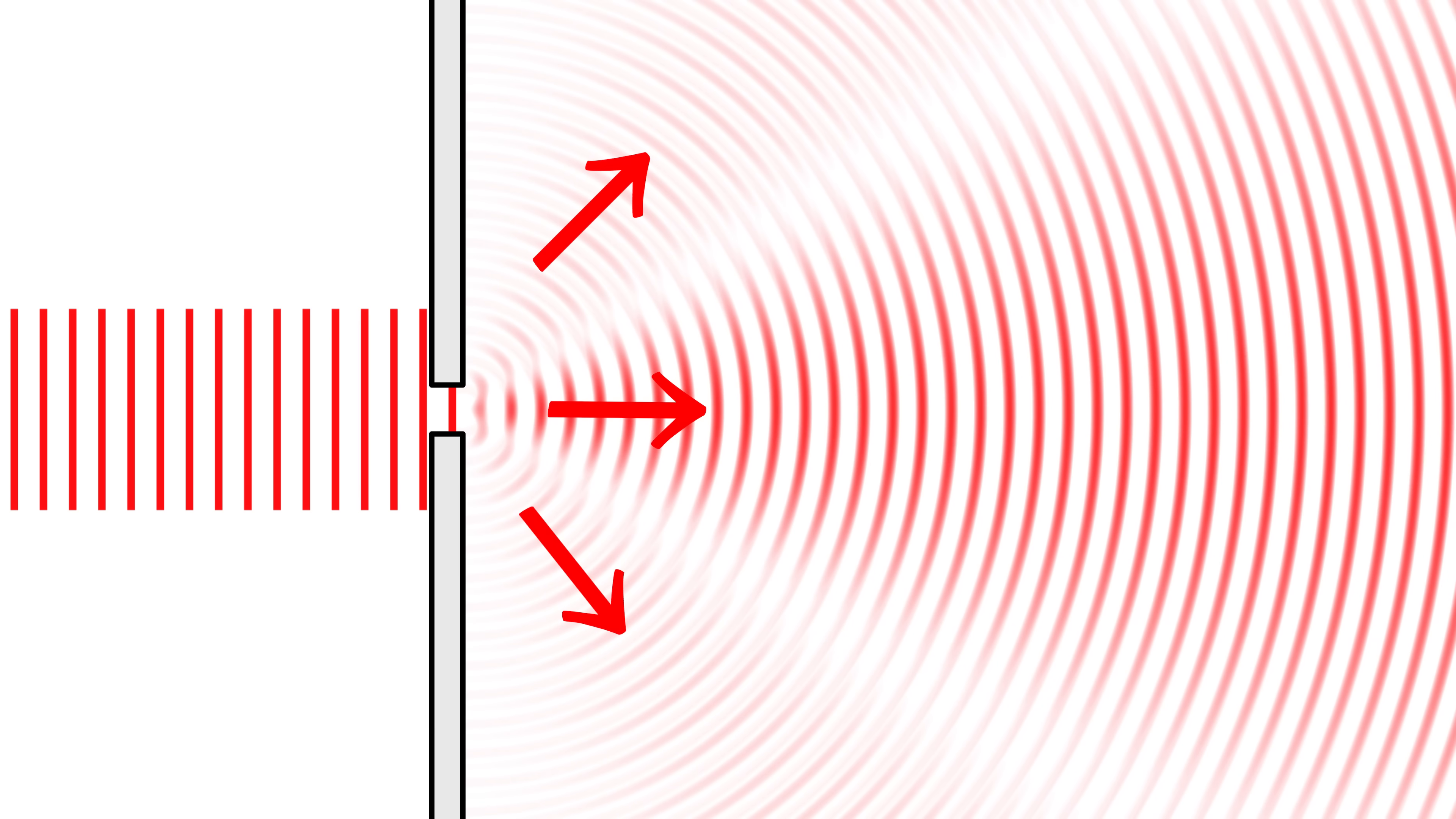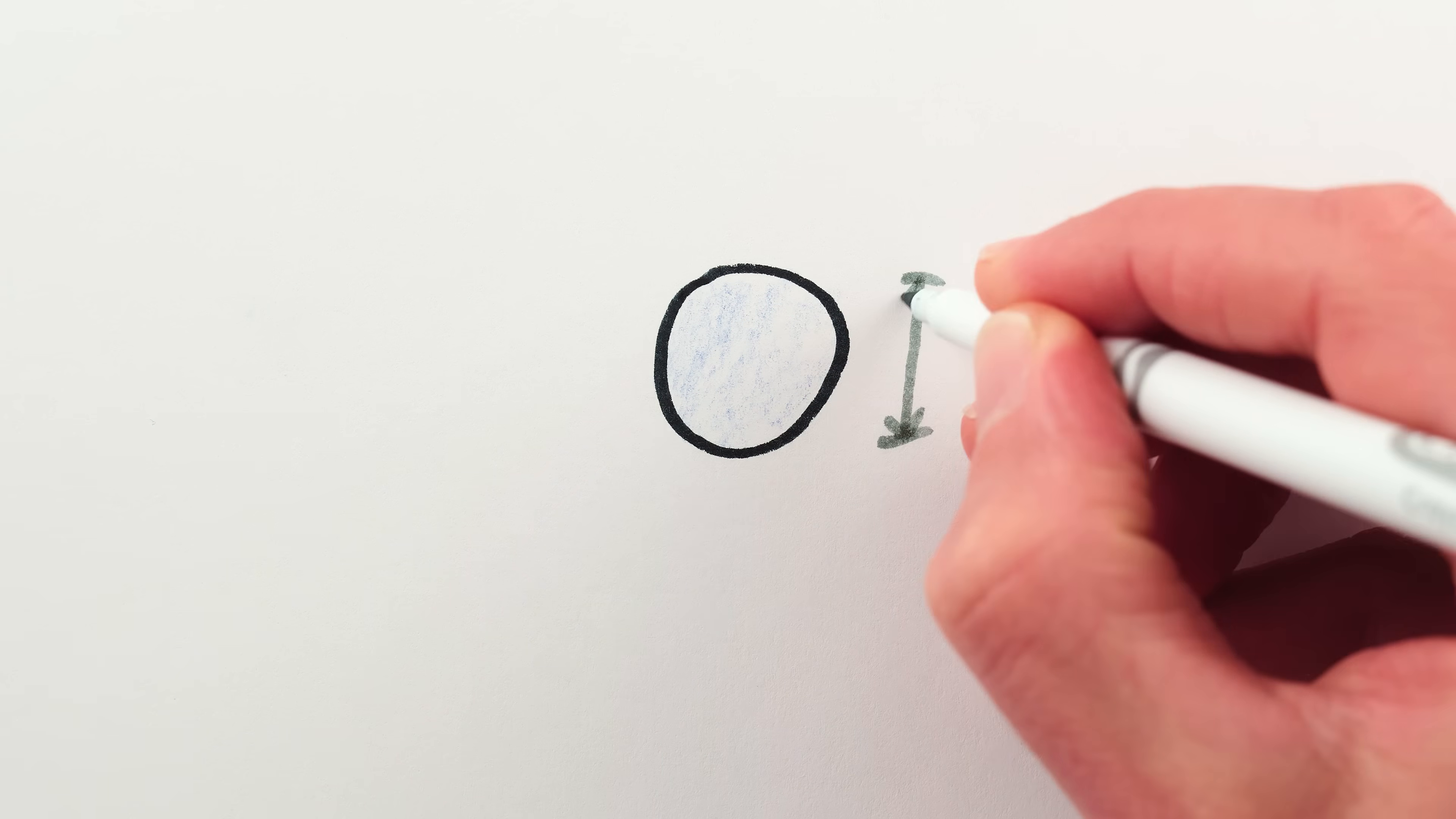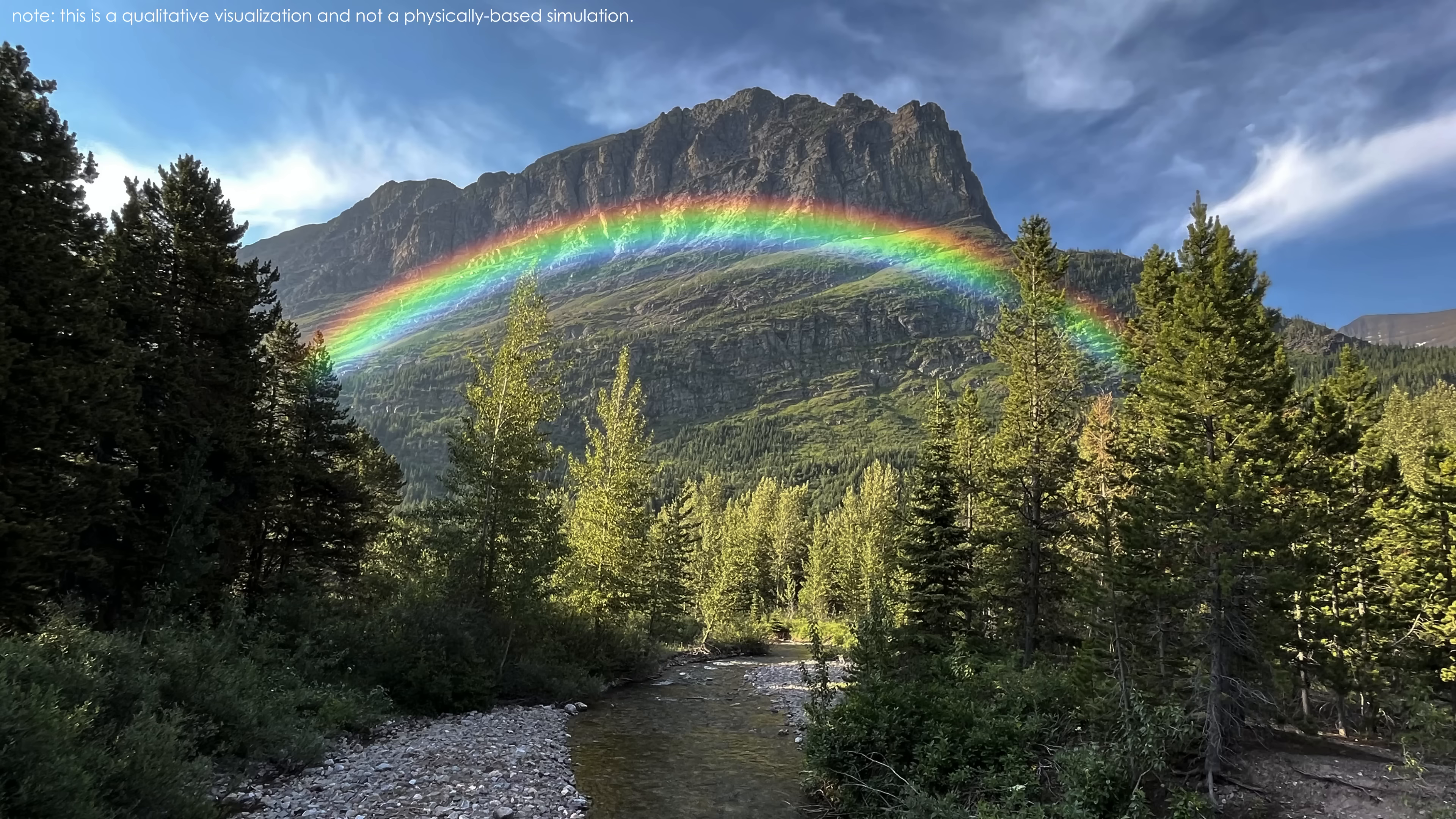The narrower the slit, the broader the diffraction pattern, the wider the slit, the tighter the pattern. And the raindrops in normal rainbows are the equivalent of very wide slits. For a rainbow formed from raindrops a millimeter or larger in size, the diffraction pattern is so narrow that the effects of diffraction are essentially absent, and you get the crisp, high-contrast stereotypical rainbow.